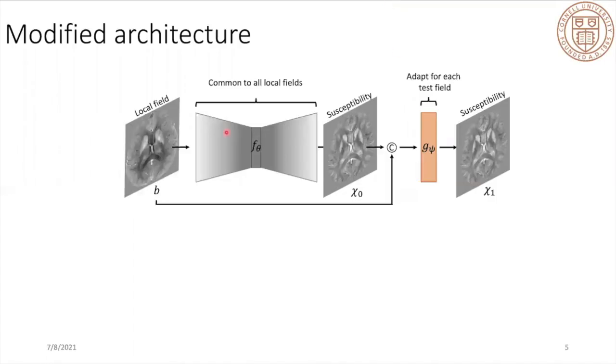To solve these issues, we propose a modified architecture as follows. We have this 3D U-Net as a first stage prediction. After we get the first susceptibility chi_0, we concatenate this chi_0 with the input local field. This concatenated map is fed into a second network G to generate the second step prediction chi_1. This second network is smaller than the first one, and during fine-tuning step, only the trainable weights of the second network are updated for each test case for fast adaptation.